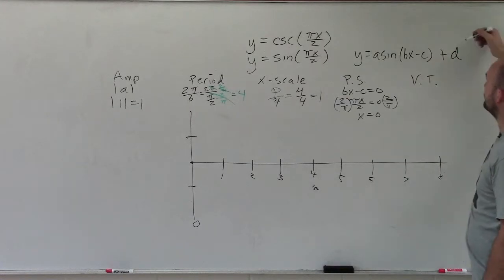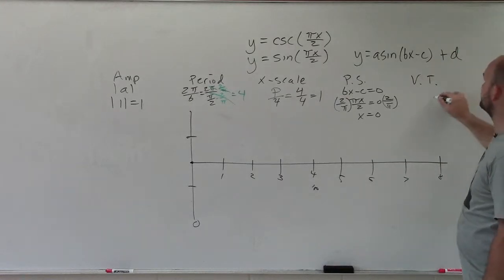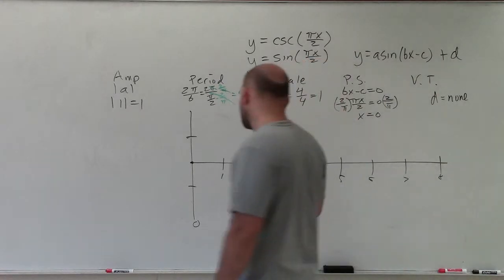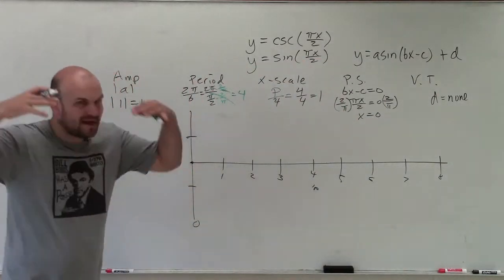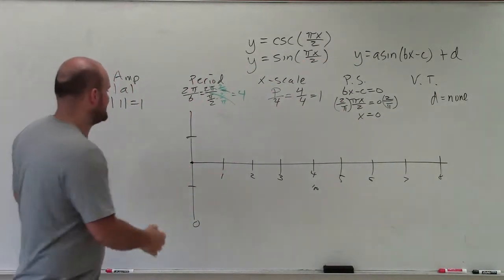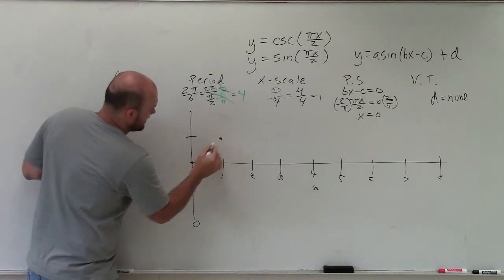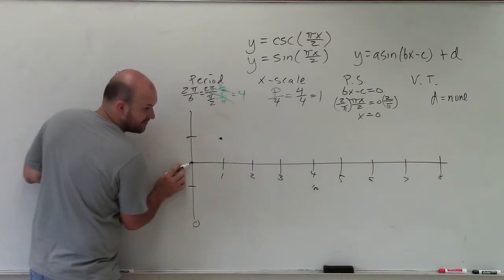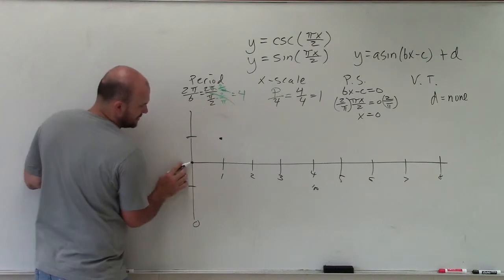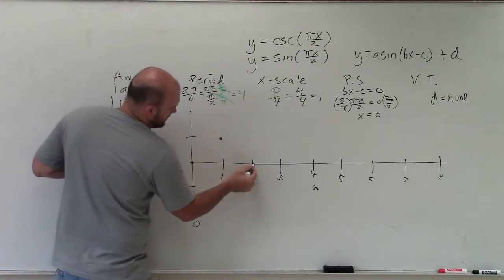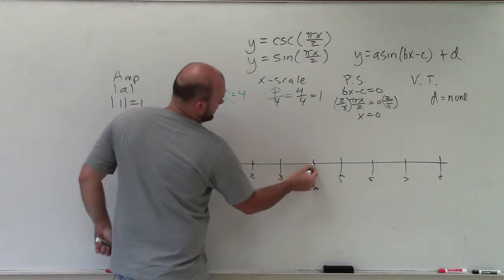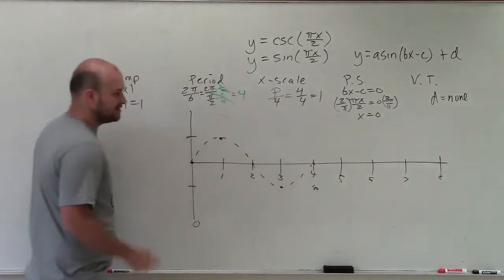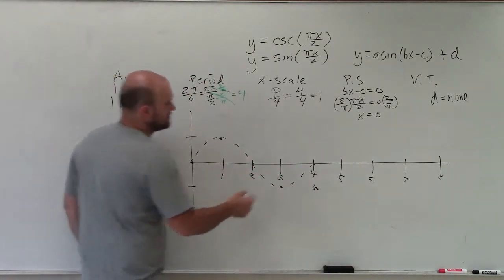Vertical transformation is how you shift the graph up or down, which is your d value — in this case there is none. So by having my understanding of what the sine graph looks like, I know it's going to start intercepting at 0, because that's my starting point from the initial parent graph. Then it's going to go up, intercept, minimum, intercept. That is going to create one period, and you can see the graph is going to repeat itself.